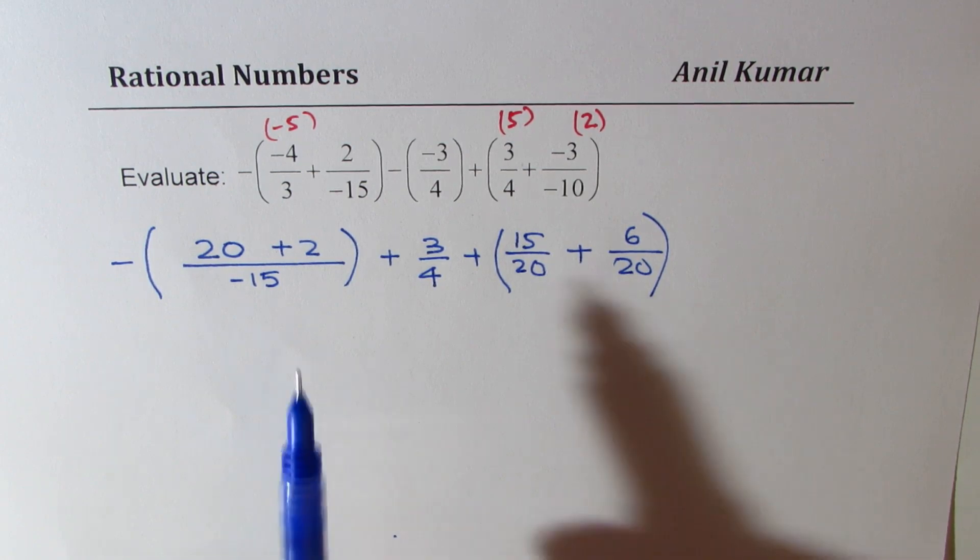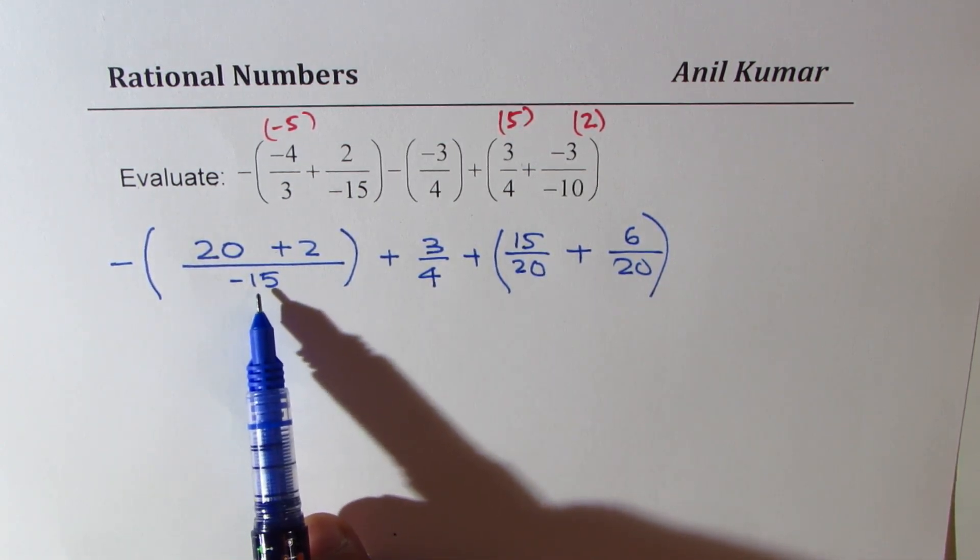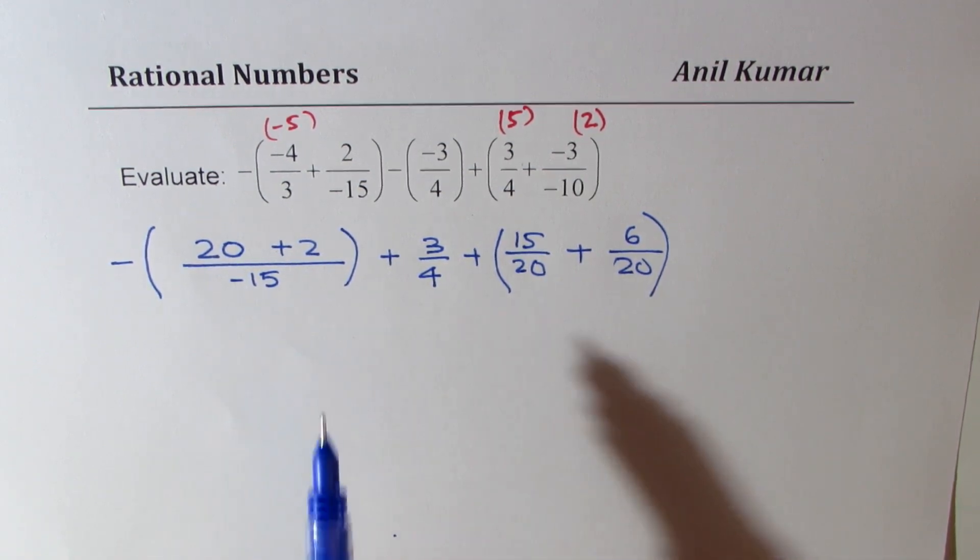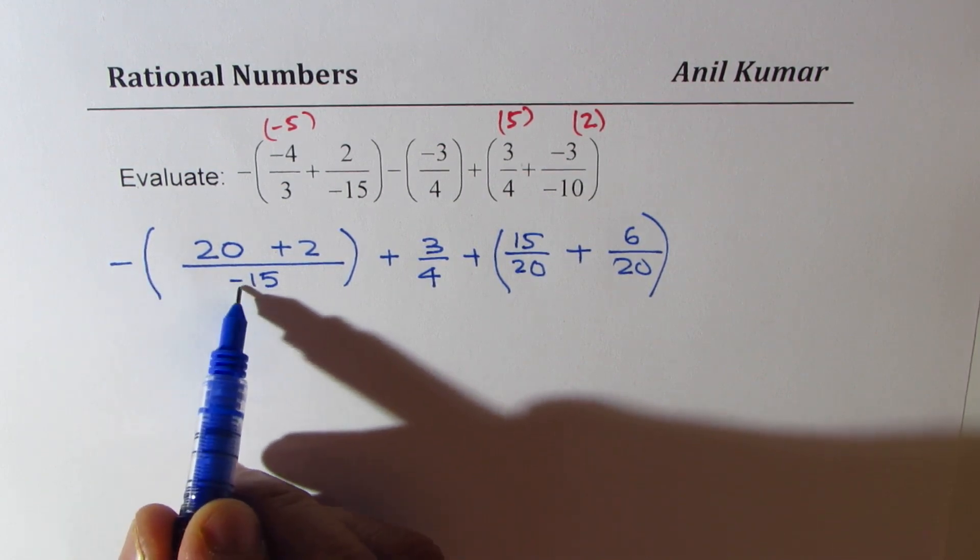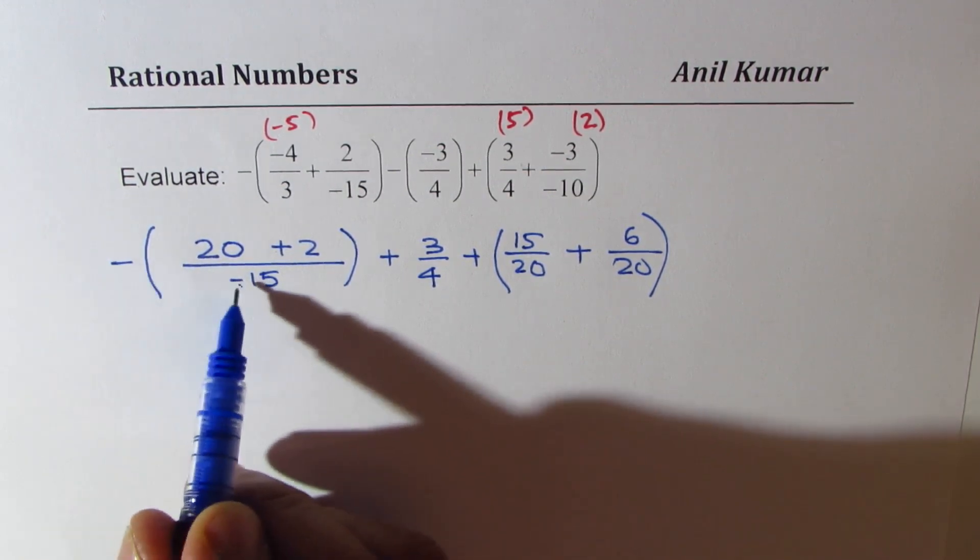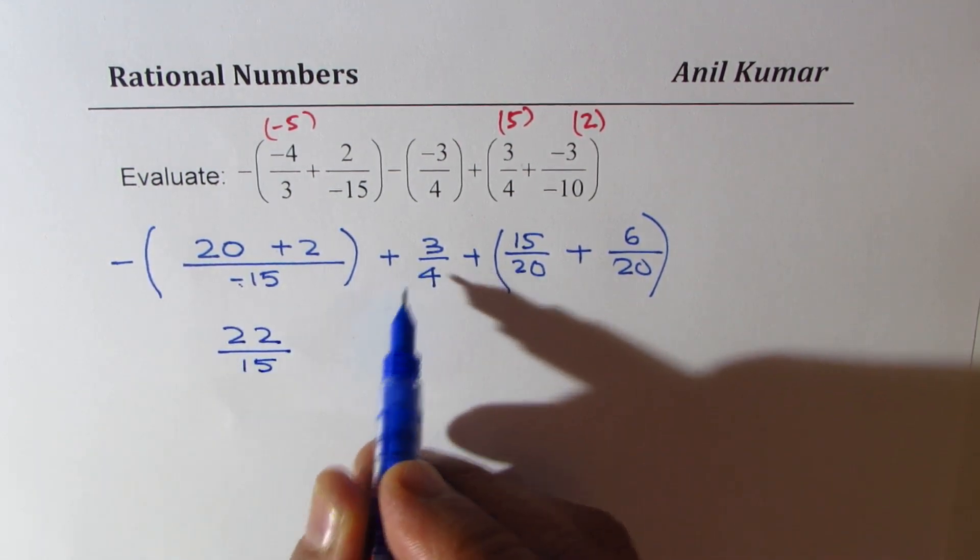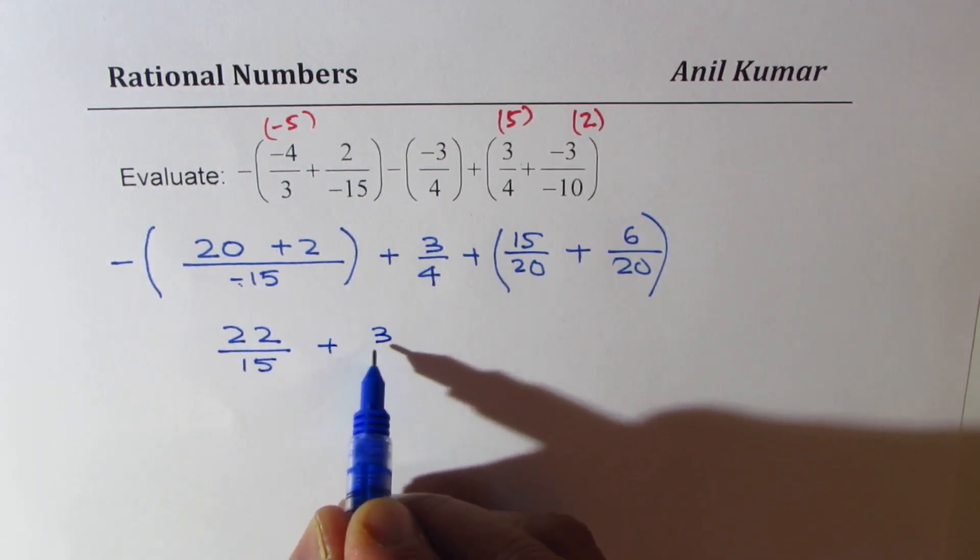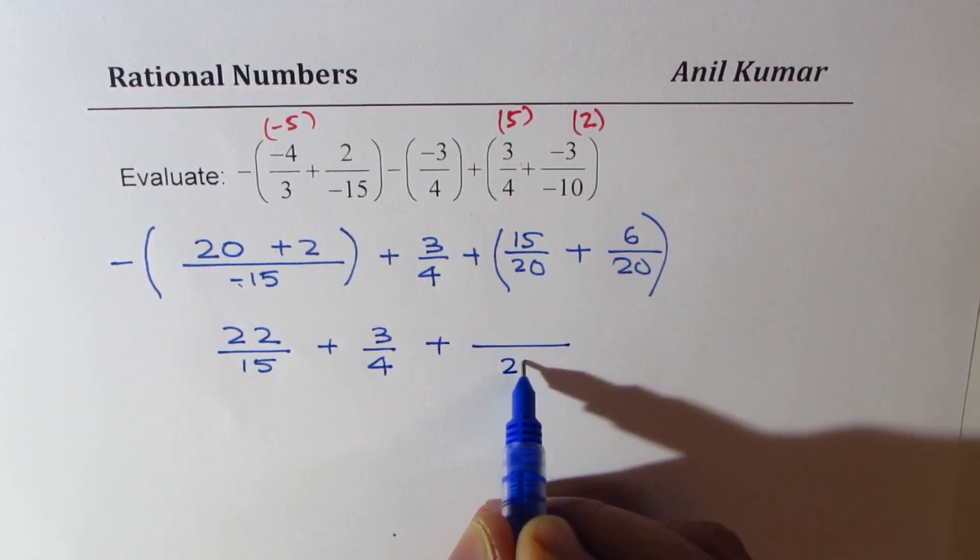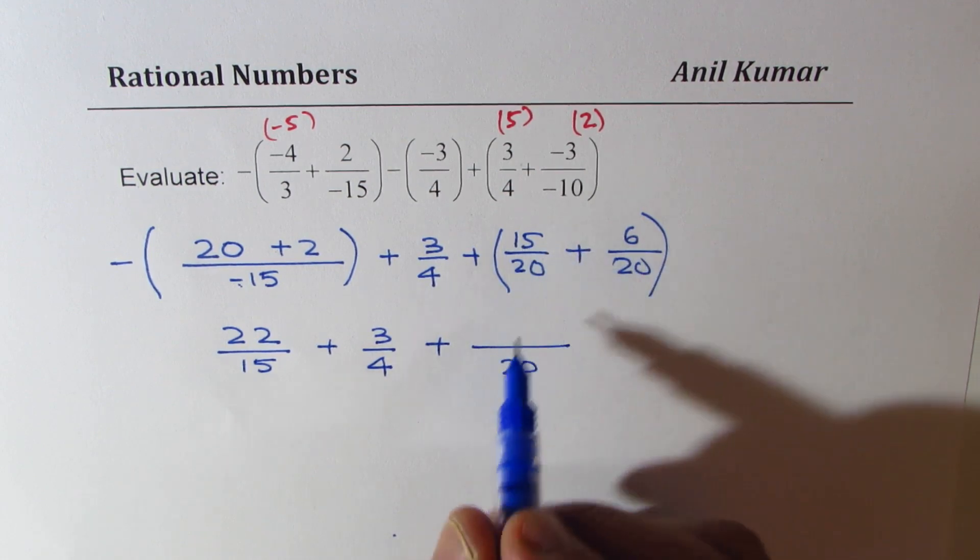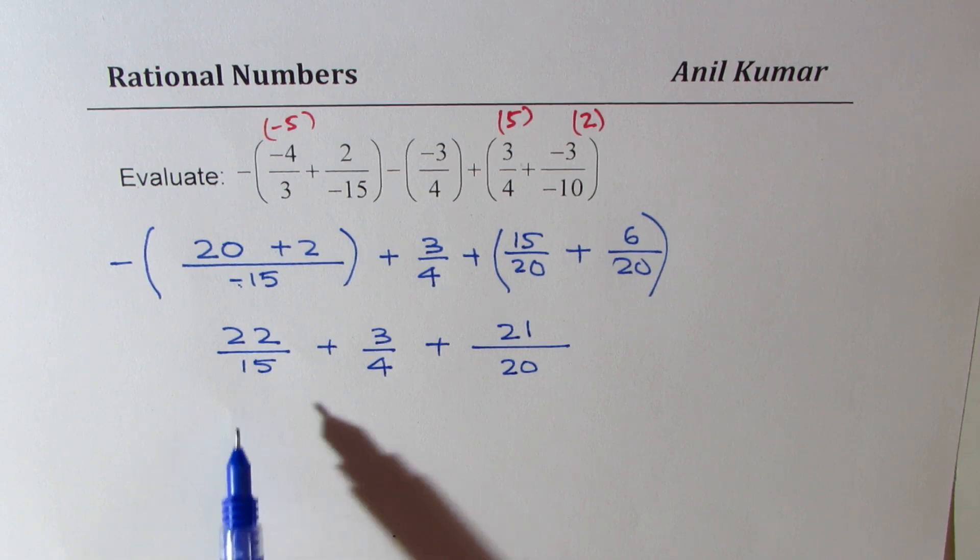So, there are two ways to write. One, keep them separate or common denominator. Both are correct, okay? So, let's simplify this. So, we have minus and minus, that makes it positive, 22 over 15. Now, here we have plus 3 over 4. And then, 20 is the common denominator. And we get 15 plus 6, which is 21.